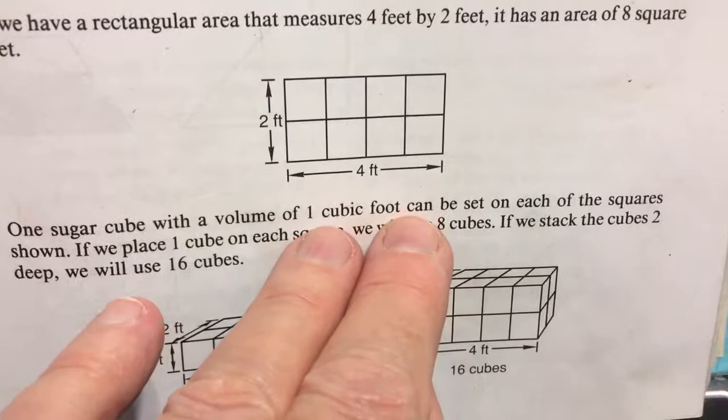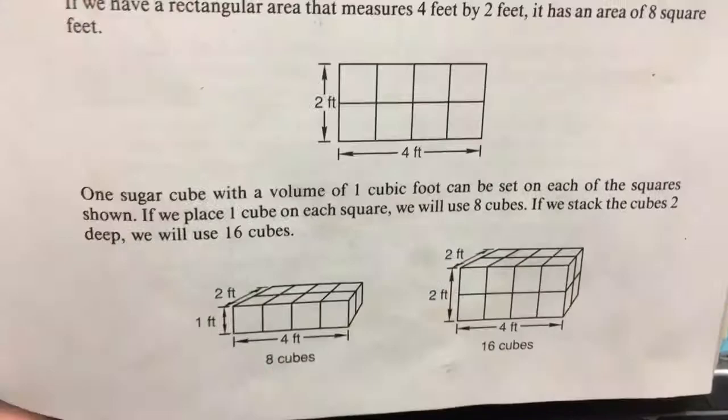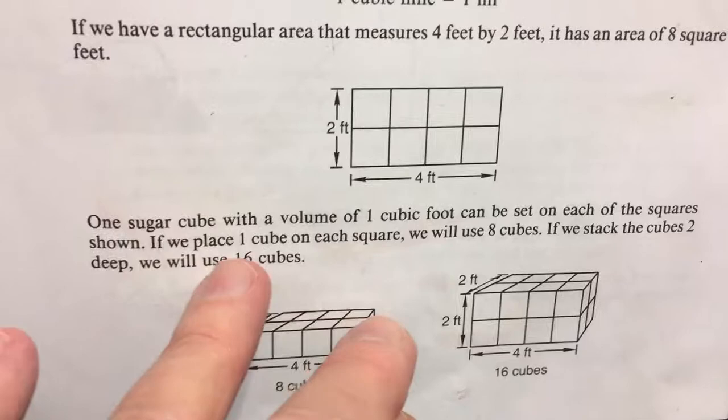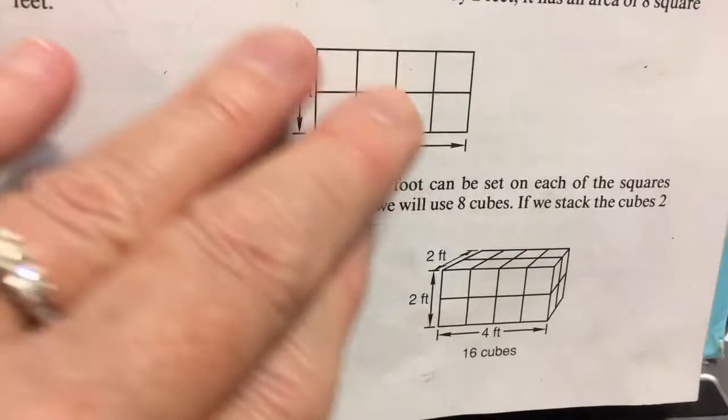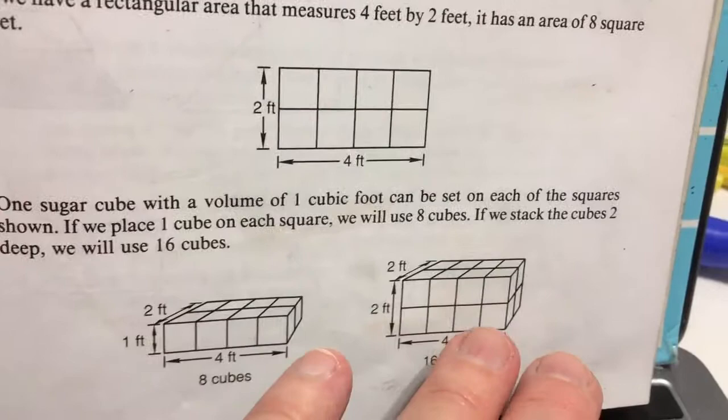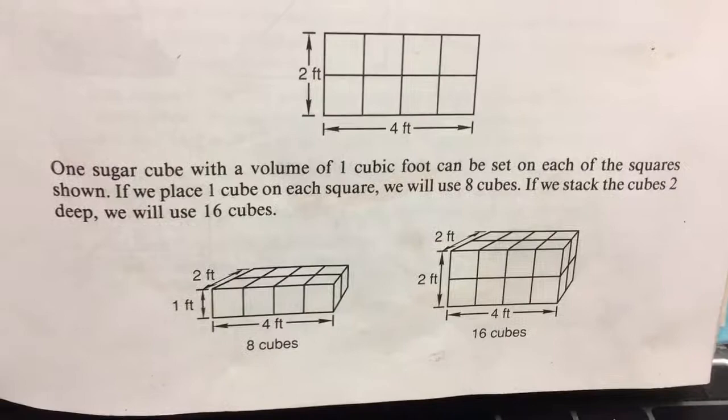We usually have sugar cubes that are really tiny. If we place one cube on each square, we will use eight cubes. If we stack the cubes two deep, we will use 16 cubes. Here they have a picture of one cube set on each one of these blocks. What if we stack them too high? Each sugar cube is a whole foot — now that's a lot of sugar. Remember what a foot is — my ruler is a foot long.